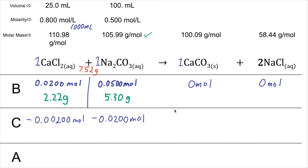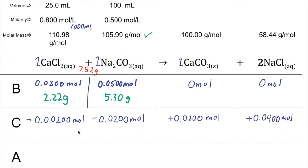On the product side: calcium carbonate has a coefficient of 1, so 0.0200 moles of CaCl₃ will be produced. For sodium chloride, twice as many moles are produced due to its coefficient of 2. On the after line, all of the calcium chloride is used up — it is the limiting reactant — leaving 0 moles and 0 grams of CaCl₂.